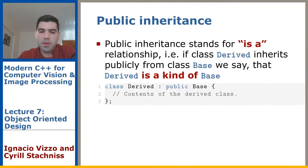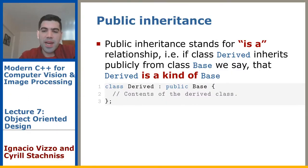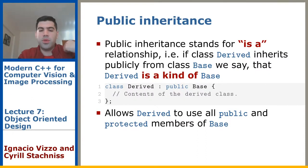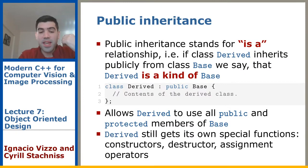The idea behind public inheritance is an 'is-a' relationship — a derived class inherits publicly from a base class, so we say derived is a kind of base. The syntax uses the colon operator followed by 'public' and the base type name. This allows Derived to use all public and protected members of Base, while Derived still gets its own special functions — you can add its own constructor, destructor, and so on.